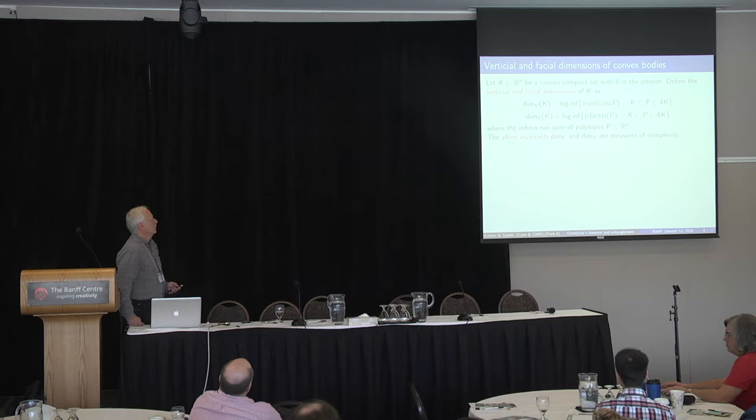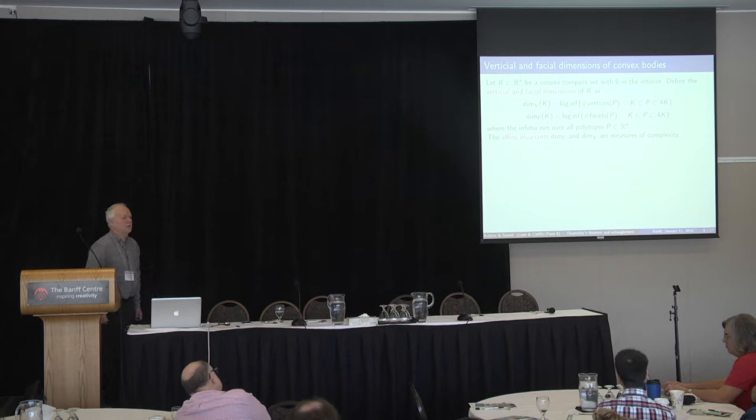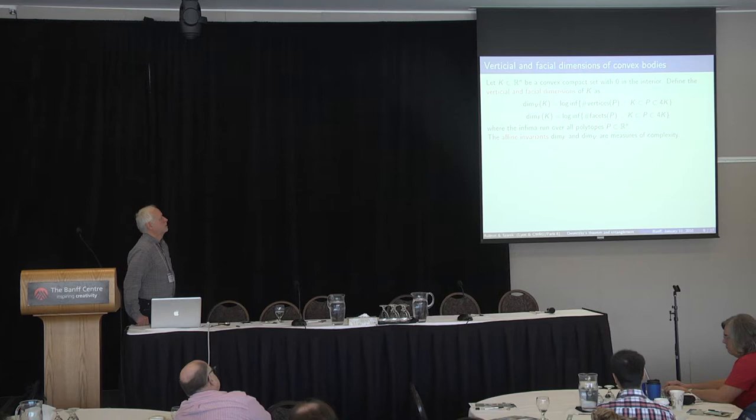These are refining variants in the sense that if you replace K with an image of K under a linear map, this is an invariant property — you get exactly the same number.